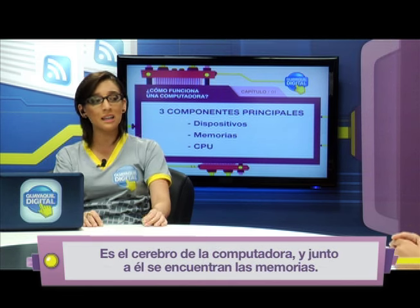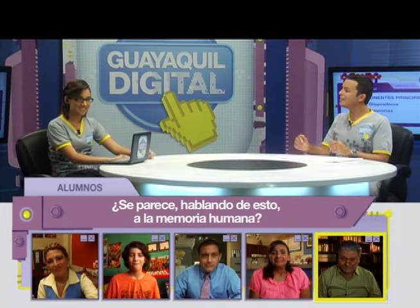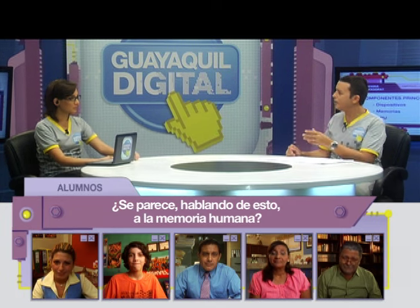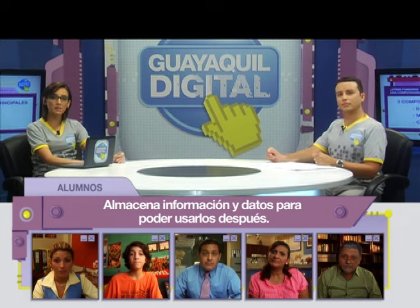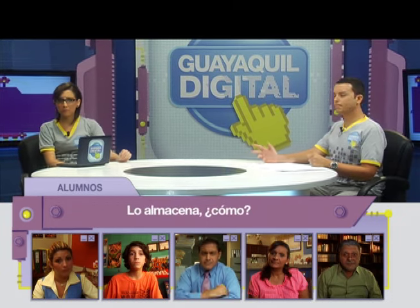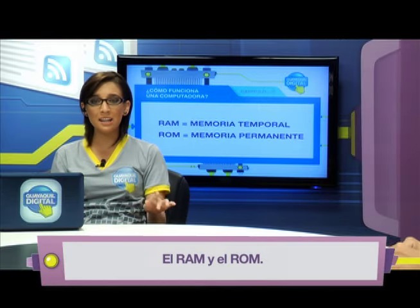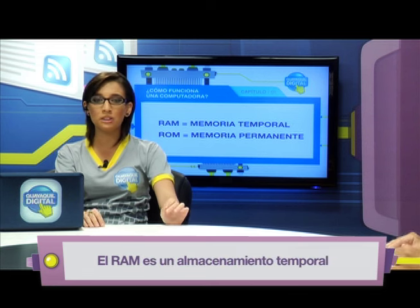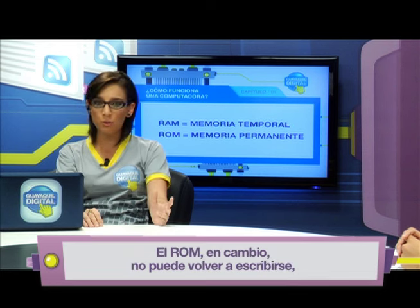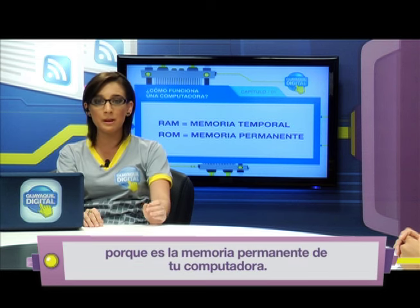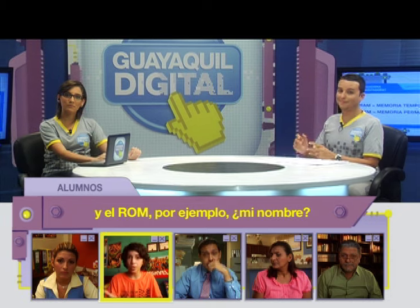La memoria de la computadora es igual a la nuestra: almacena información y datos para poder usarlos después. La memoria de la computadora se divide en dos, el RAM y el ROM. El RAM es un almacenamiento temporal que puede reescribirse cuantas veces haga falta. El ROM, en cambio, no puede volver a escribirse porque es la memoria permanente de tu computadora. El RAM es lo que tienes que acordarte de hacer en el día, y el ROM, por ejemplo, tu nombre.